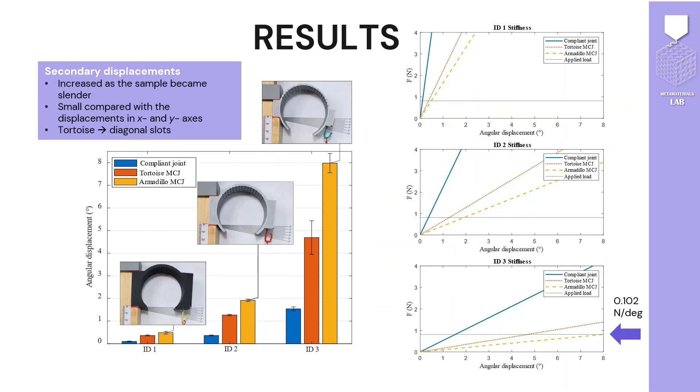At the right, you can see a graph of stiffness. Samples with higher stiffness correspond to the just-compliant case. The most flexible samples were the ones of ID3 for the armadillo meta-compliant joint, with a stiffness of 0.102 newtons over degrees.